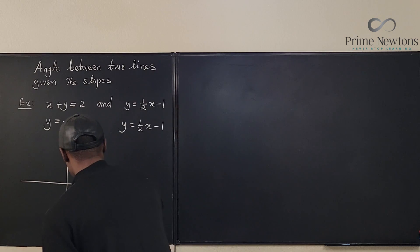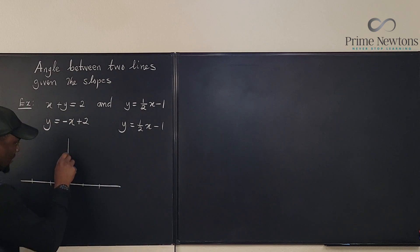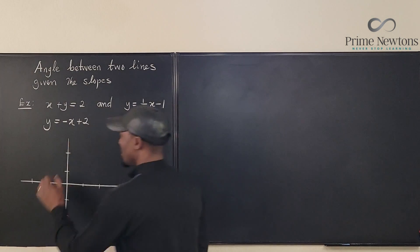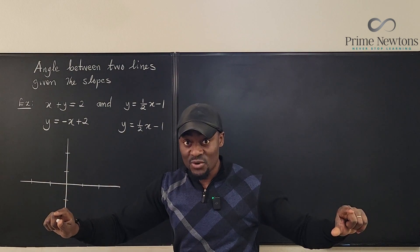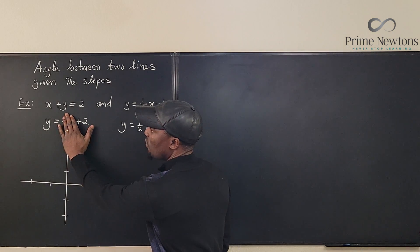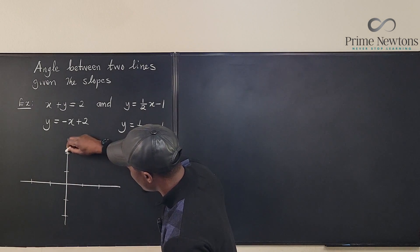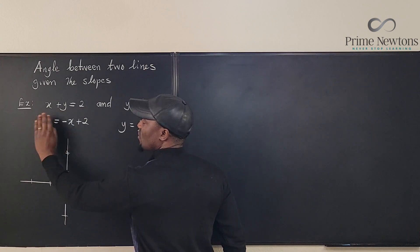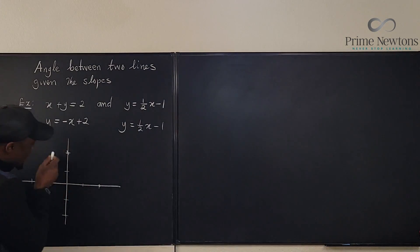Let's set up our axes and mark the coordinates. To plot a straight line, the easiest way is to find the x and y intercepts. For y = −x + 2: when x = 0, y = 2, giving us one point. When y = 0, x = 2, giving us another point. Join those two points to get the line.